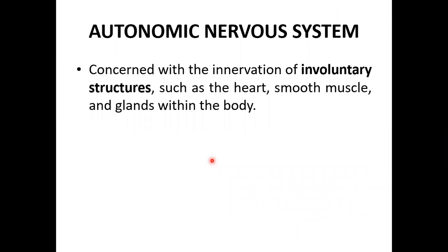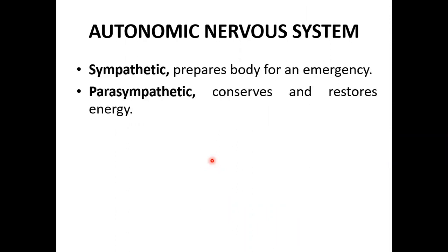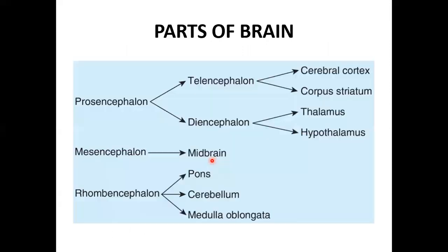The autonomic nervous system is concerned with the innervation of involuntary structures such as the heart, smooth muscle, and glands. It has two parts: the sympathetic division, which prepares the body for an emergency, and the parasympathetic division, which conserves and restores energy.